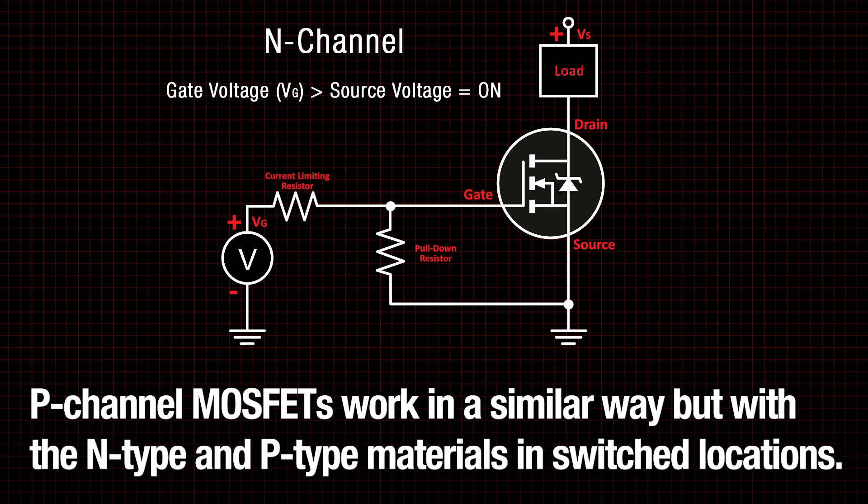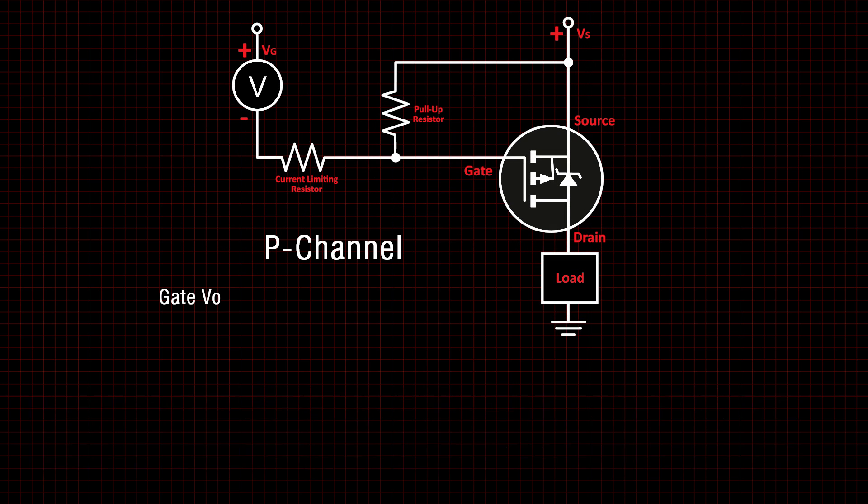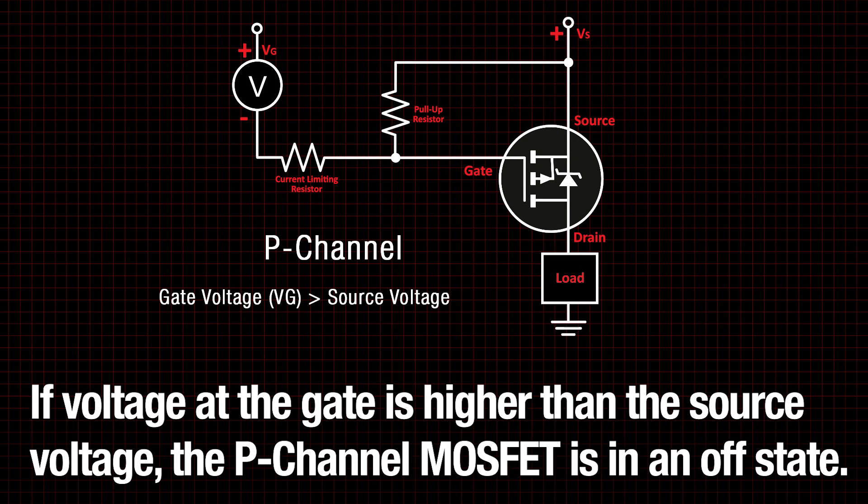P-channel MOSFETs work in much the same way, but the n-type and p-type materials are in switched locations. If voltage at the gate is higher than the source voltage, the p-channel MOSFET is in the off state.